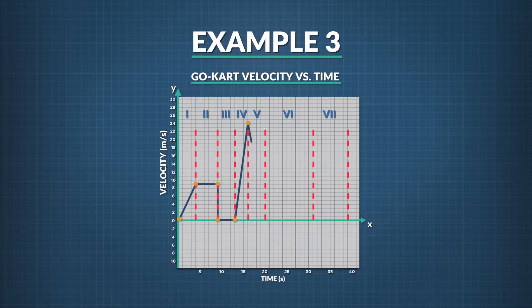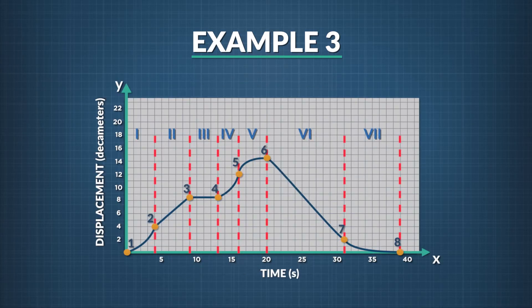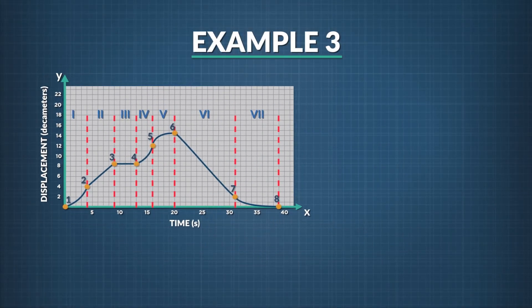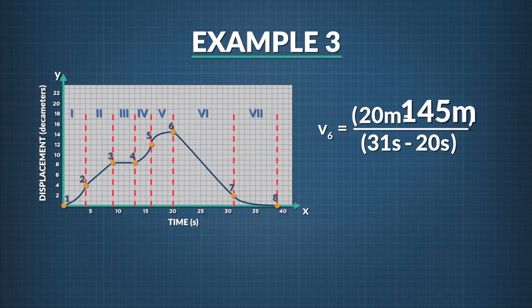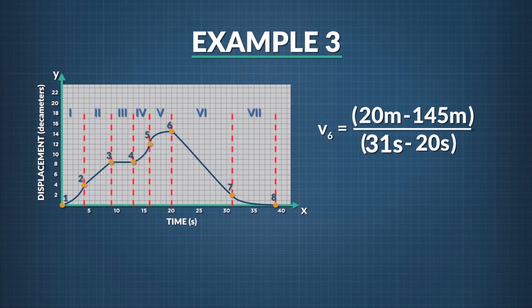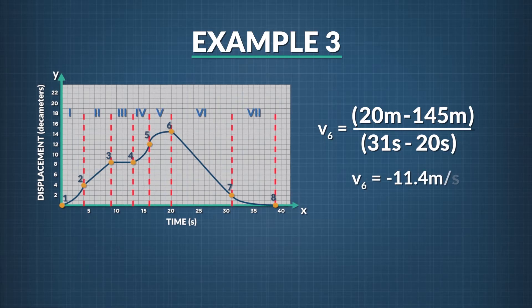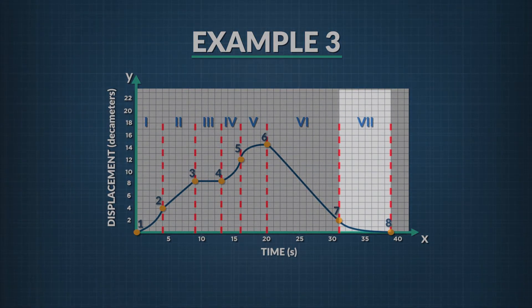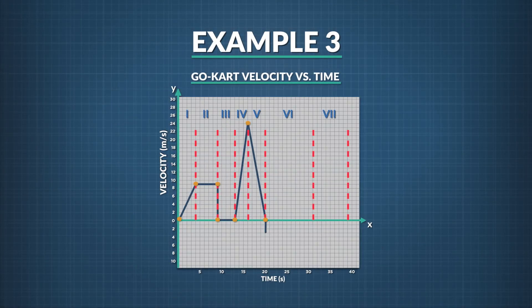We draw that in on the velocity versus time graph. Moving on to region six, the slope of the displacement versus time curve is negative and constant, which means the velocity is negative and constant. The go-cart is traveling at a constant rate back toward the origin. The value equals 20 meters minus 145 meters divided by 31 seconds minus 20 seconds, which gives us negative 11.4 meters per second. Finally, in region seven, the slope is negative and increasing, which means the velocity is negative and increasing. It begins at negative 11.4 meters per second and reaches zero by the time the ride ends.